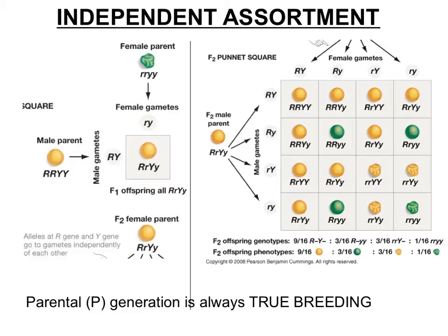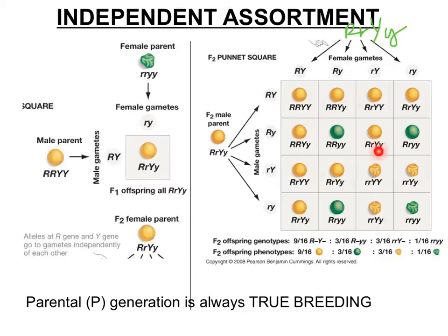It's a little easier to see independent assortment when we look at a cross. If we do a Punnett square looking at the F1 offspring, we cross F1 by F1 to get our F2. In the heterozygote, the female parent is big R, little r, big Y, little y, and we look at the gametes produced. Big R has just as much probability of getting together with big Y as big R with little y, or little r with big Y, or little r with little y. So upon random fertilization, we can see all the possibilities of genes and alleles coming back together — they've independently assorted.